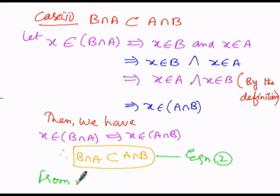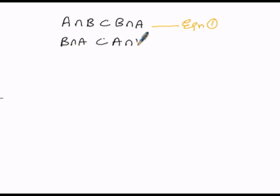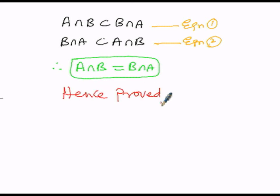From Conditions 1 and 2 — A intersection B is a subset of B intersection A, and B intersection A is a subset of A intersection B — it is clear that when LHS is a subset of RHS and RHS is a subset of LHS, we conclude A intersection B equals B intersection A. Hence, we have proved both commutative properties: A union B equals B union A, and A intersection B equals B intersection A.